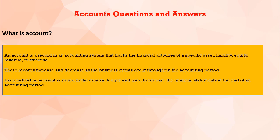So in the record, we maintain decreases or increases in the business, profit and loss. Each individual account is stored in the general ledger and used to prepare the financial statements at the end of the accounting period. We have accounting financial statements like profit and loss account, balance sheet, cash flow, forecast, and whatever we are going to make.